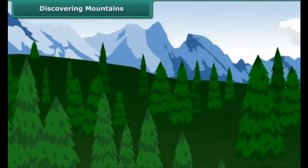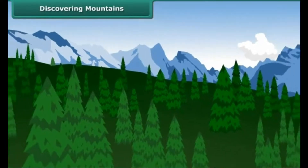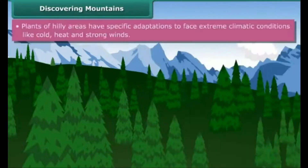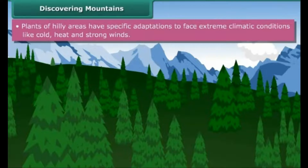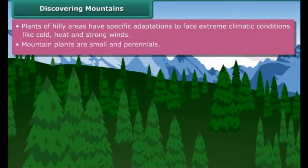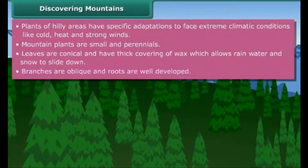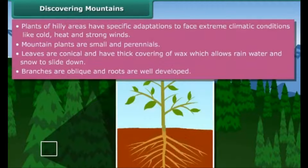Did you ever think why trees growing in hilly regions are different from trees growing in grasslands or forest regions? Plants of hilly areas have specific adaptations to face extreme climatic conditions like cold and strong winds. Plants are small and perennials. Leaves are conical and have a thick covering of wax which allows rainwater and snow to slide down. Their branches are oblique and roots are well developed.